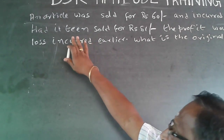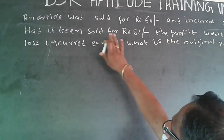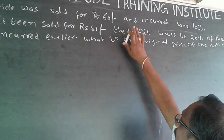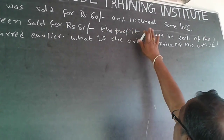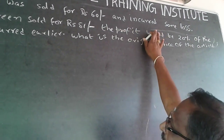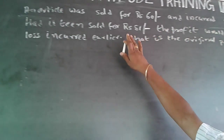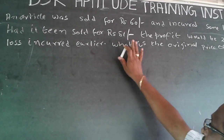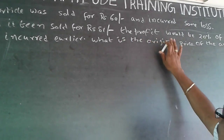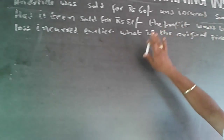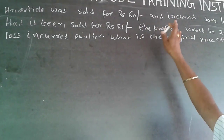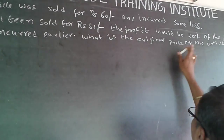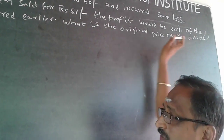The question is: an article was sold for Rs 60 and some loss was incurred. Had it been sold for Rs 81, the profit would be 20% of the loss incurred earlier. What is the original price of the article?